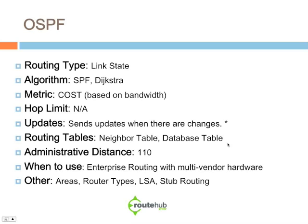The cost metric in OSPF is based on bandwidth. As a rule of thumb: the higher the bandwidth, the lower the cost. From one router to another across multiple paths, OSPF takes the total accumulative cost to determine which path to take.